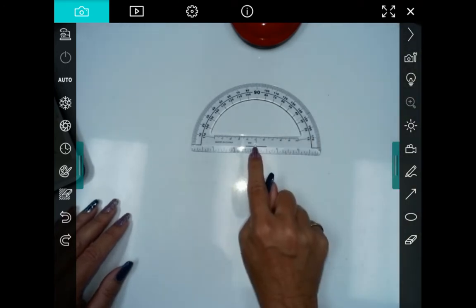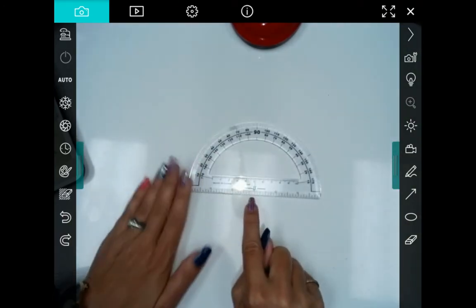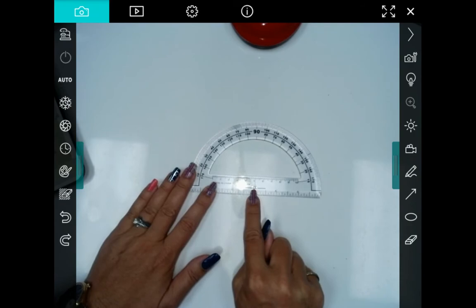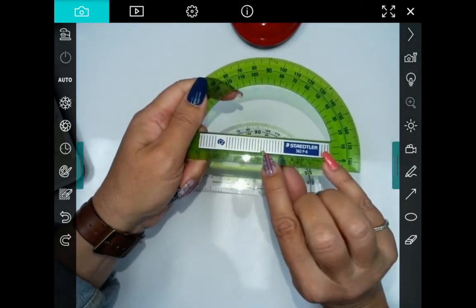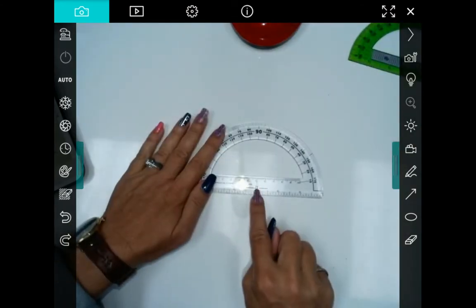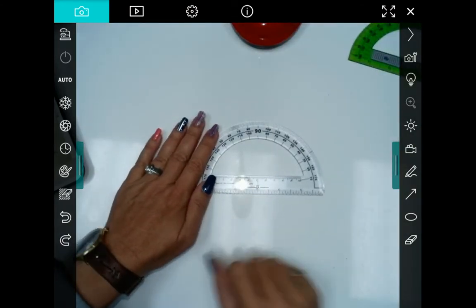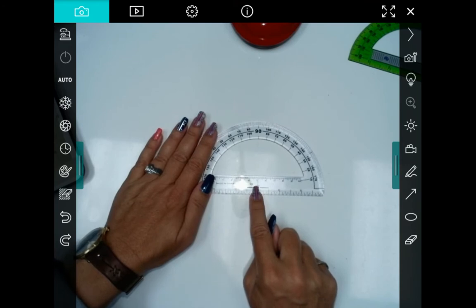there's a little hole right here in the center of all of your protractor. So here in my green one, it's right there. And here in my clear one, it's right there. Okay, that hole serves a purpose.